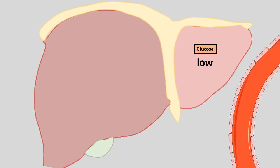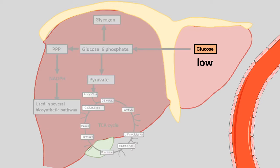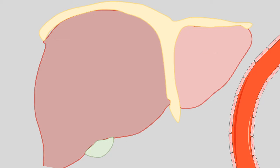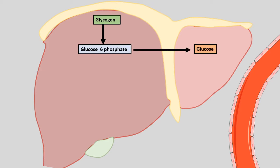But in the fasted state, glucose is low, so all of these pathways would stop. However, the body cannot afford that because the liver, even in the fasted state, requires energy. So the liver needs alternative sources, such as glycogen. Glycogen was already stored in the liver during the fed state, and that glycogen is now going to be broken down to create glucose — similar to breaking a fixed deposit in a bank. Depending upon the demand, the body is breaking glycogen and making glucose.